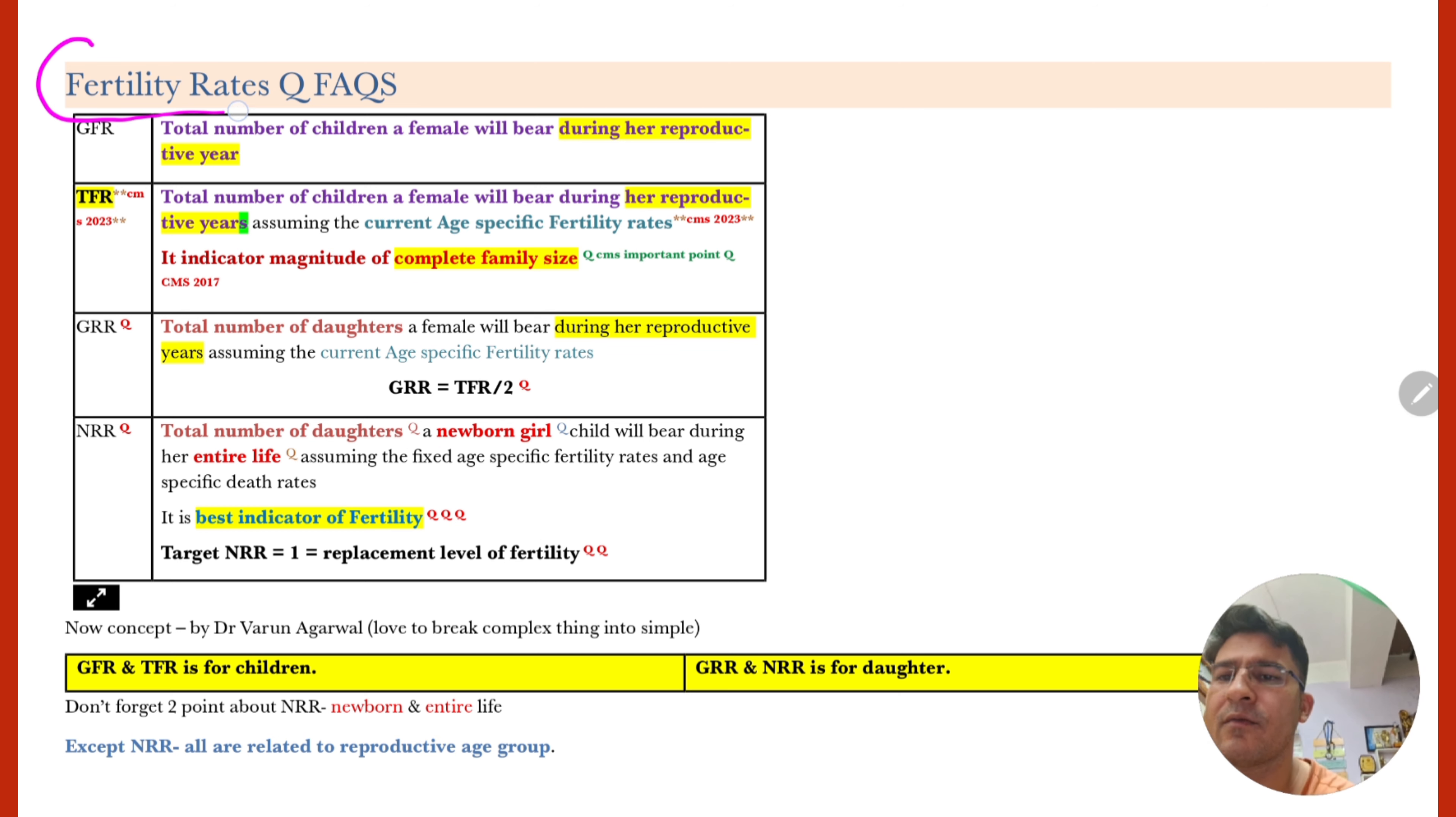Now it's time for fertility rate. Wow. Fertility rate very important. Isko maine kaafi aasaan bana diya hai. Sabse pehle concept samajte hai. Now concept by Dr. Varun. I love to break complex thing into simple. Aise maine kyu bola. Aap dekho main isko kitna aasaan banane wala hu. So basically GFR and TFR for children. And GRR and NRR for daughter. So GFR and TFR for child. GRR and NRR for daughter. Right.